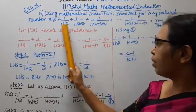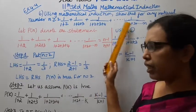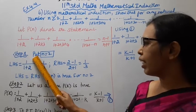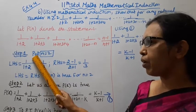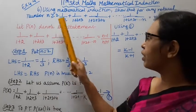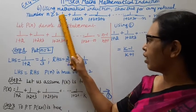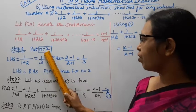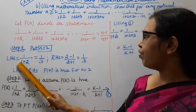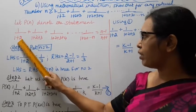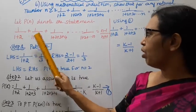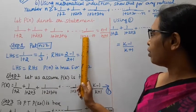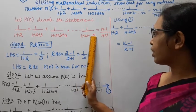To apply mathematical induction, let P(n) denote the statement. Step 1: Since n is greater than or equal to 2, put n equal to 2. Left hand side: 1/(1+2), which is 1/3.